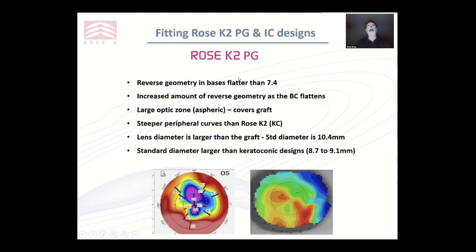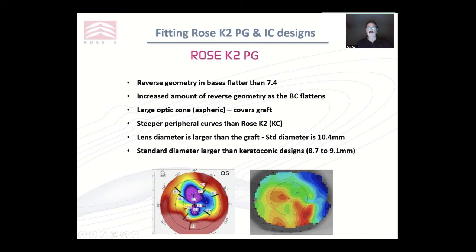So what is the PG design? It has reverse geometry at any base curve flatter than 7.4. Once you get steeper than that, you're typically getting to a normal shaped cornea and therefore you don't need reverse geometry. You can increase the amount of reverse geometry as the base curve flattens — a 9.0 base curve has much more reverse geometry than the 7.4. It has a large back optic zone covering the entire graft, usually over 8mm, steeper peripheral curves than the keratoconus lens, and a larger diameter with the standard being around 10.4 for the trial set.